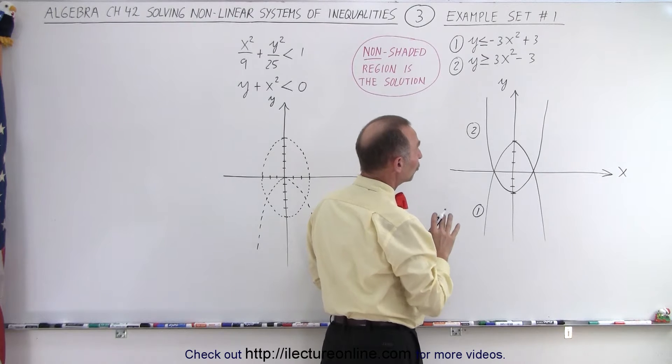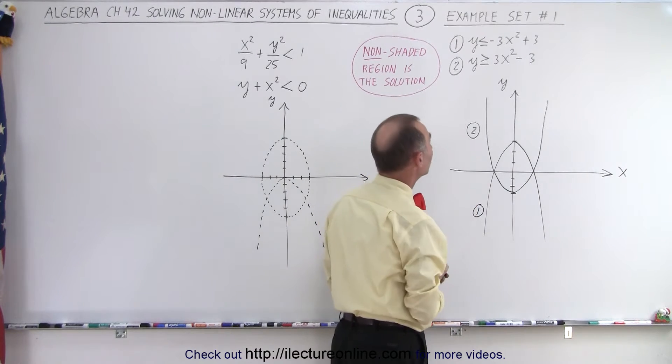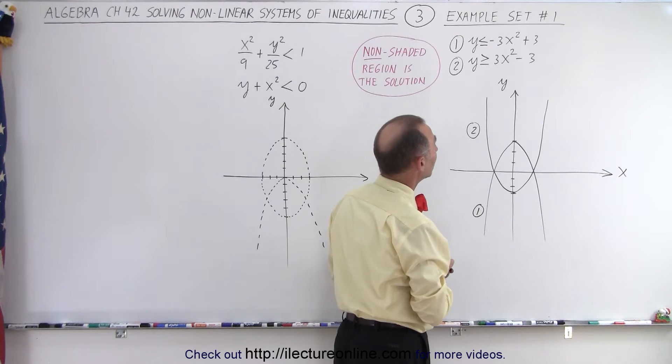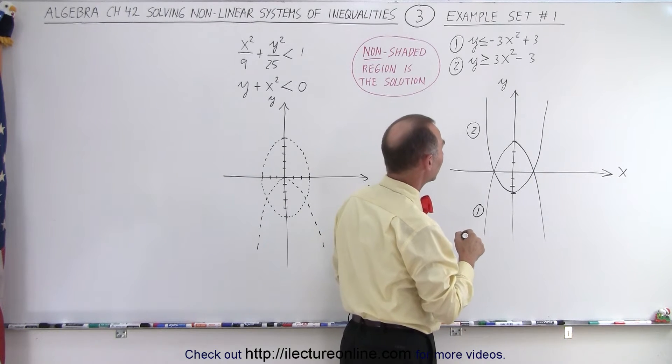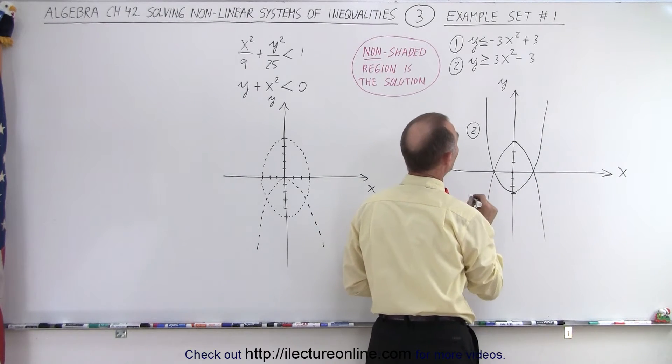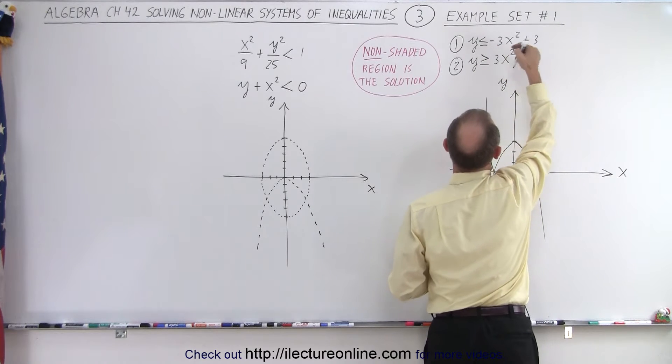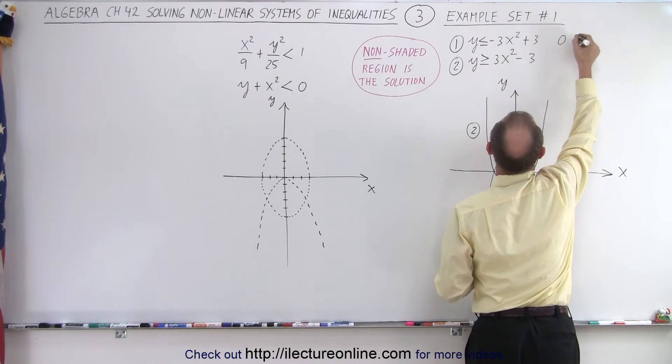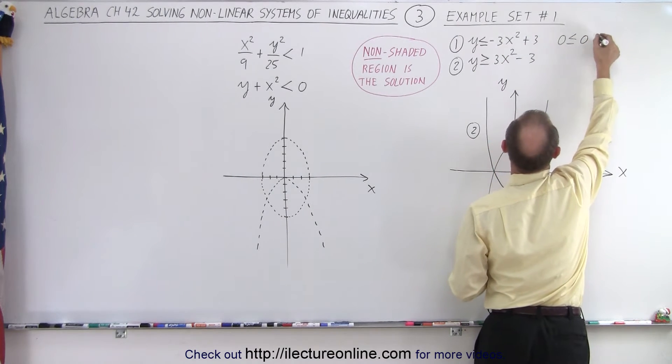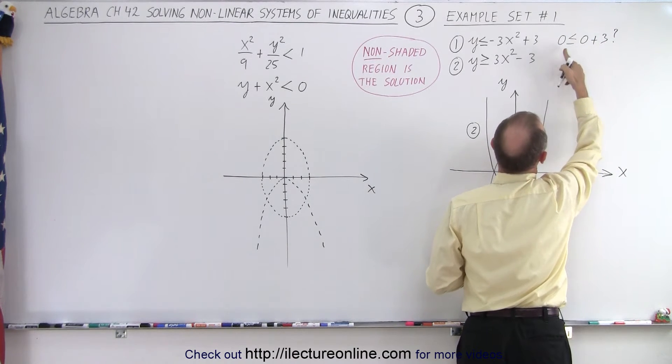The best way to find out which region satisfies the inequality: we can put in a test point. Of course, if you pick (0,0) as a test point, that's always the best. So let's try (0,0)—plug in zero for x and zero for y. So we get 0 ≤ 0 + 3, question mark, and the answer is yes. Zero is less than three.